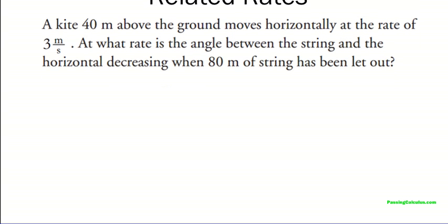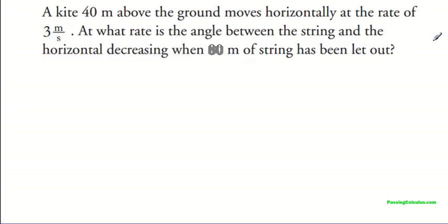So this is a very good example, a kite example. Let me read the question and I'll draw a picture for you guys. A kite 40 meters above the ground moves horizontally at a rate of 3 meters per second. At what rate is the angle between the string and the horizontal decreasing when 80 meters of string is let out? So let me just draw a little triangle and illustrate the idea.